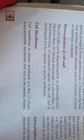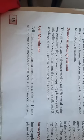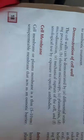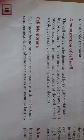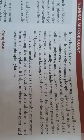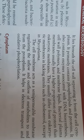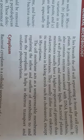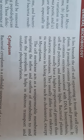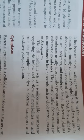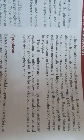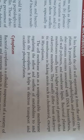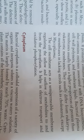The cell membrane or plasma membrane is a thin, 5–10 nanometer, semi-permeable membrane that acts as an osmotic barrier. It lies beneath the cell wall, separated from the cell cytoplasm. It primarily contains phospholipids and protein, and also contains enzymes associated with DNA biosynthesis, cell wall polymers, and membrane lipids. Bacterial plasma membranes usually have a higher proportion of protein than eukaryotic membranes and differ from eukaryotic membranes in lacking steroids such as cholesterol, except in mycoplasma.